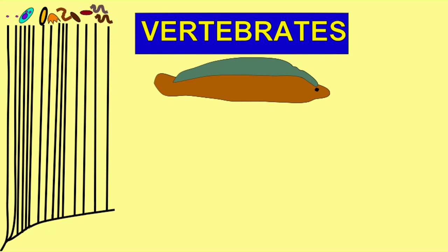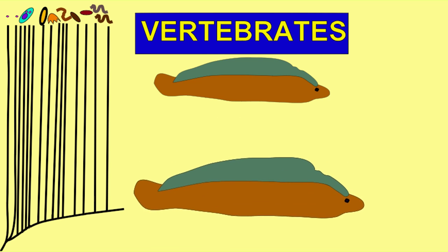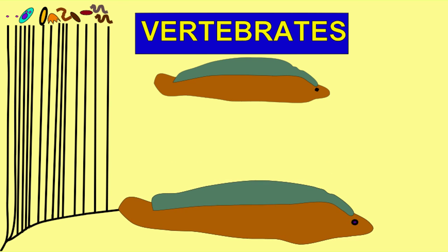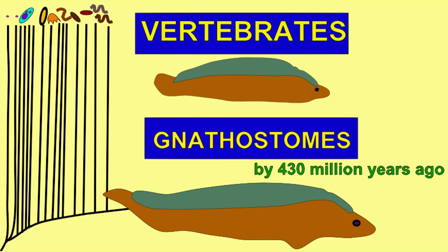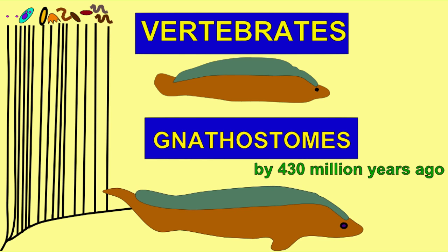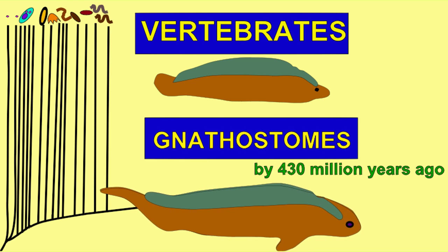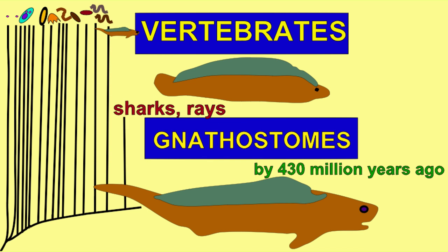The group of jawed vertebrates, known as gnathostomes, are a monophyletic clade. They are monophyletic because all of the descendants of the most recent common ancestor are included in the group. The group can be defined by shared derived features, such as jaws.